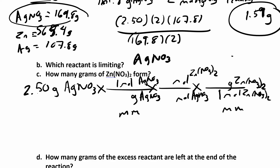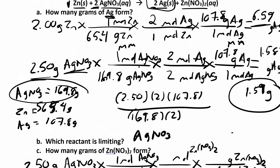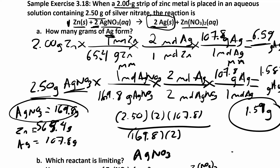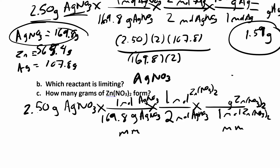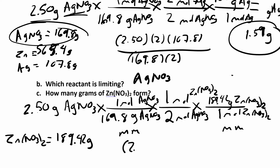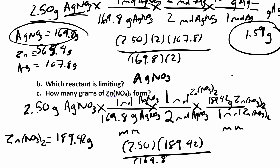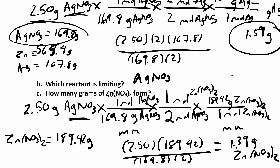So grams per one mole — I have the same molar mass here: 169.8 grams for silver nitrate. Scrolling back up to our chemical equation, I'm comparing two moles of silver nitrate to one mole of zinc nitrate. The molar mass of zinc nitrate is 189.42 grams, so that goes on top. In the calculator: 2.5 times 1 times 189.42, divided by 169.8 times 2. When you work all of that out, you get 1.39 grams of zinc nitrate. If you use up all of your silver nitrate, that's how many grams of zinc nitrate you'll get.